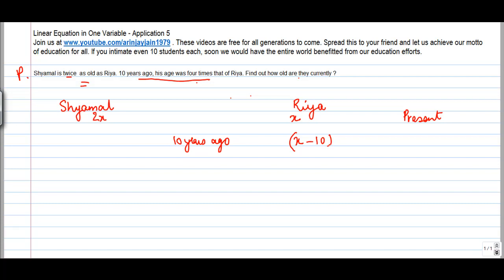Because she was ten years younger vis-a-vis what she is today, and similarly Shamal who is 2X today would be 2X minus 10 years old, right?